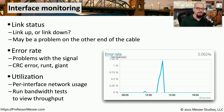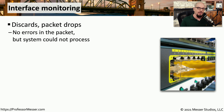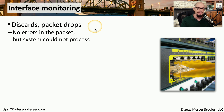We want to check every interface to understand its utilization and be able to identify any spikes or drops in normal utilization percentages. If we're concerned that an interface is not able to send or receive the proper amount of traffic, we could run bandwidth tests to confirm it's working as expected. If there is a problem with data or a device becomes over-utilized, we may find that we have discards or packet drops. Monitoring those metrics can tell you if a particular interface or component within that device is having problems.